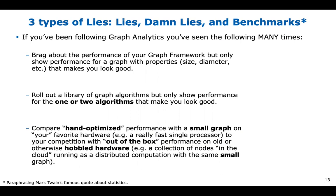Someone will brag about the performance of their amazing graph framework, but then they'll only show data for a graph with properties that just happen to make that framework look good. Or another one: you announce your fabulous graph library, but then you only show performance for the one or two algorithms that make you look good.